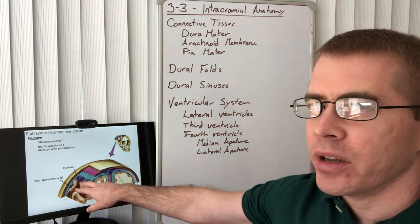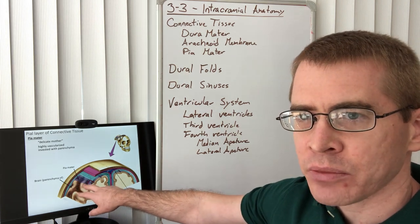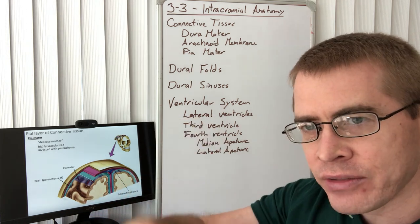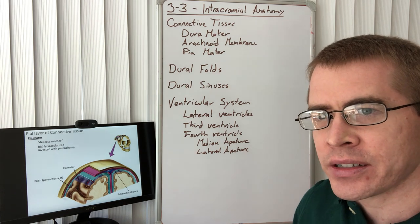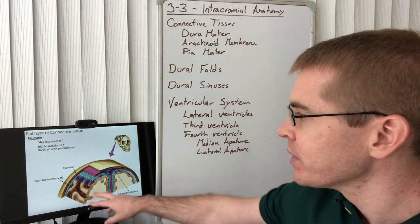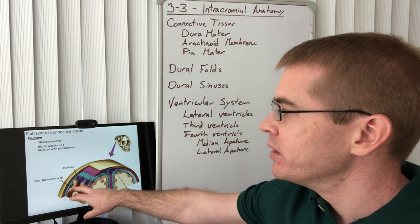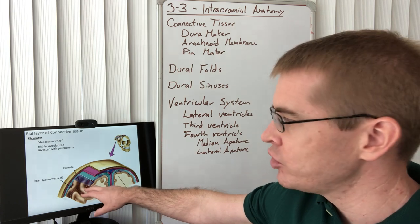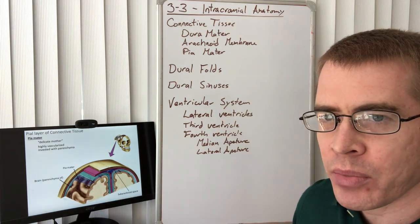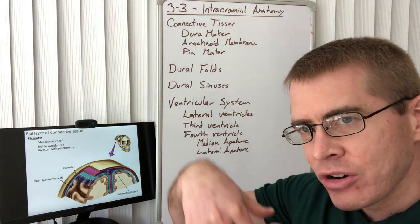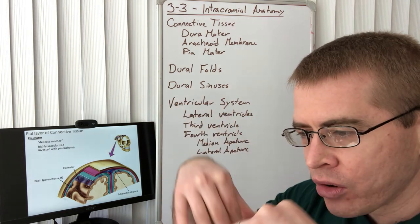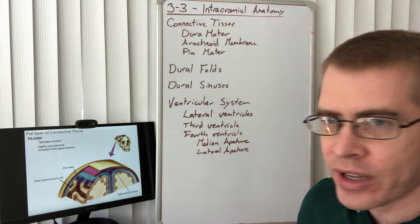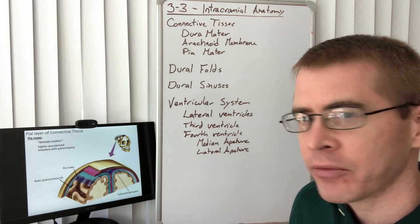The pia mater is the highly vascularized portion of the connective tissue. This is where we find all the arteries as they dive down toward the brain to supply and branch into capillaries. The pia mater is very heavily invested into the parenchyma of the brain, and as arteries dive down into it, the pia mater follows those arteries into the structure of the brain — so it can't really be peeled away easily.